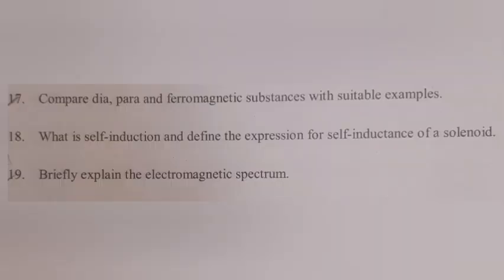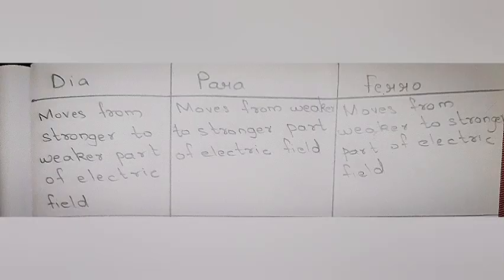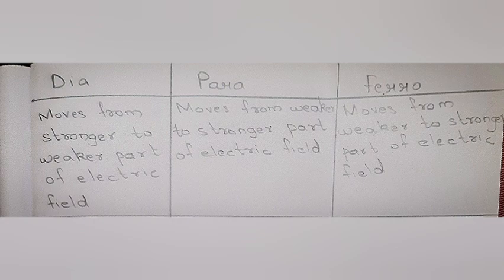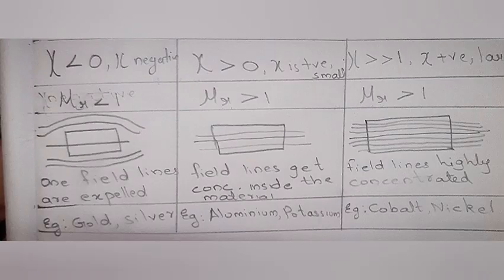Question 17: Compare dia, para and ferromagnetic substance with suitable examples. Answer: Diamagnetic moves from stronger to weaker part of the electric field. Chi less than zero, chi negative. μᵣ less than one. Field lines are expelled. Examples: Gold, silver.